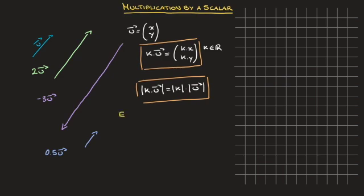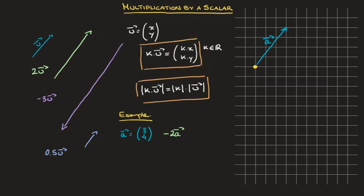Let's work through an example. Let's say we're given the vector a whose components are 3 and 4. I'll start by drawing vector a on this grid, starting from a point I've marked in yellow. To draw vector a, I move 3 units to the right and 4 units upwards — that's vector a. Now let's multiply this vector a by negative 2, i.e., the vector negative 2a. According to the formula, its components should be negative 2 times 3 and negative 2 times 4 — in other words, negative 2a has components negative 6 and negative 8.